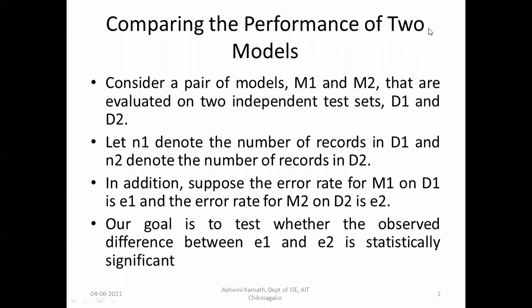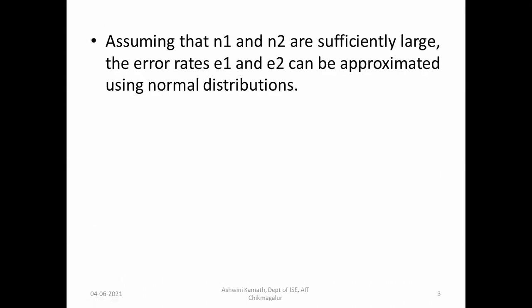Our goal is to test whether the observed difference between E1 and E2 is statistically significant. Assuming that N1 and N2 are sufficiently large, the error rates E1 and E2 can be approximated using normal distributions, because we are considering N1 and N2 as large datasets.